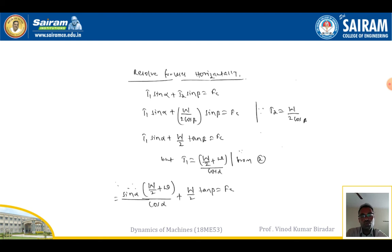Resolving forces horizontally: T1·sinα + T2·sinβ = Fc. Substituting T2 = W/(2·cosβ), we get T1·sinα + (W/2)·(sinβ/cosβ) = Fc, which simplifies to T1·sinα + (W/2)·tanβ = Fc. From Equation 2, T1 = (W/2 + w)/cosα. Substituting this into the horizontal equation gives the combined expression.